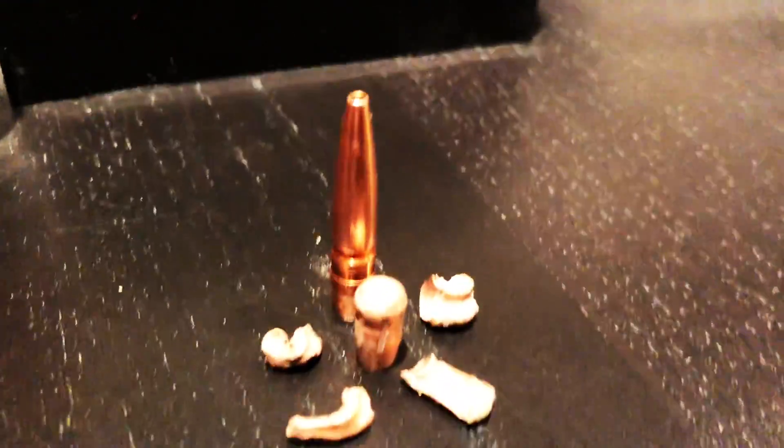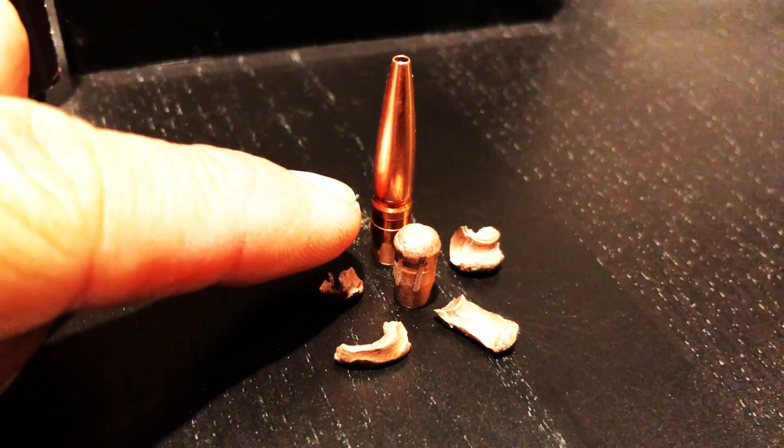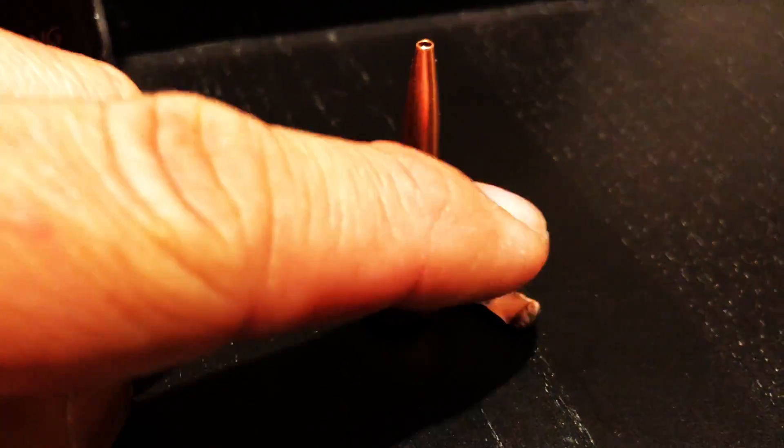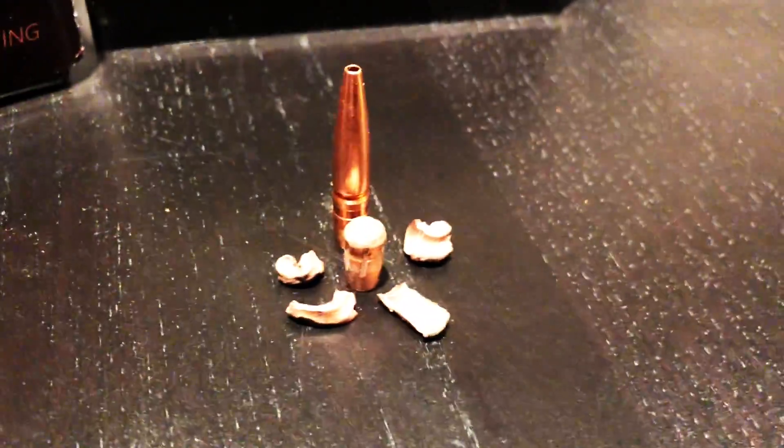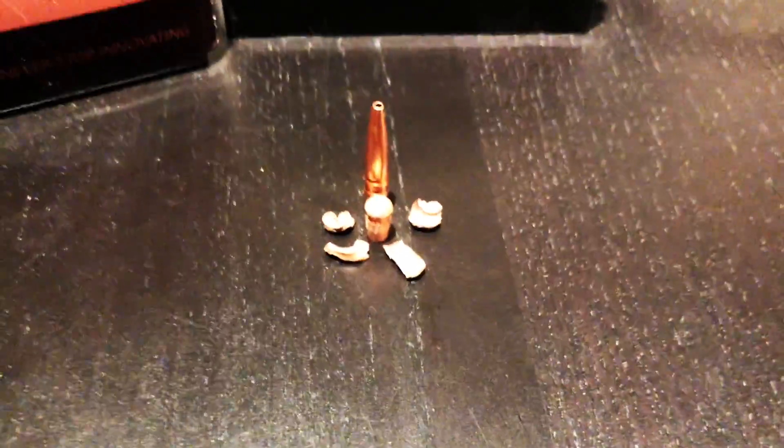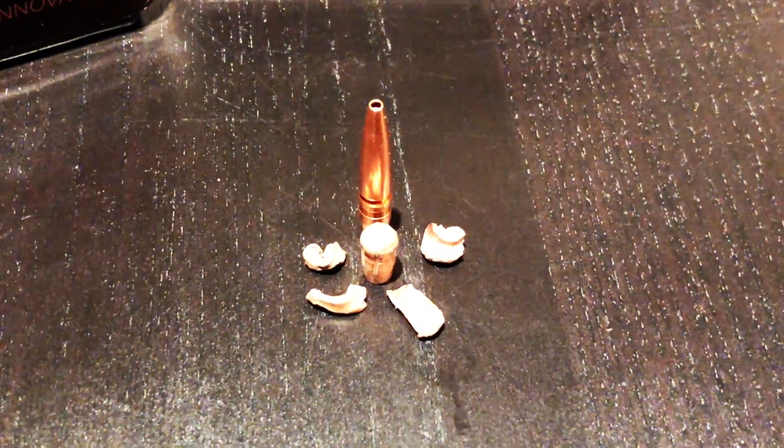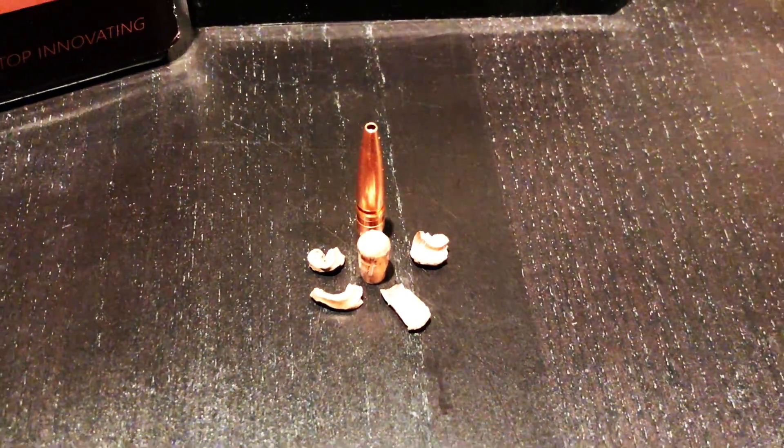It consistently breaks off at this point right here, and I've recovered four of these bullets. What you're left with are these petals, which is why it's tapered here. When Lehigh Defense was creating this bullet, its whole intention was to have a bullet that will impact an animal but not pass through. I'll put an article below so that you can read it and gather the information yourself.